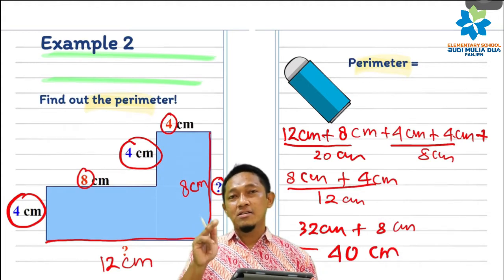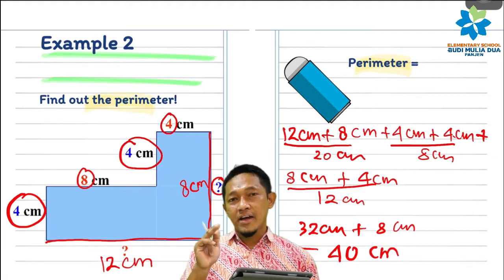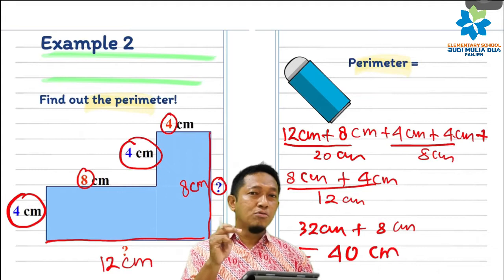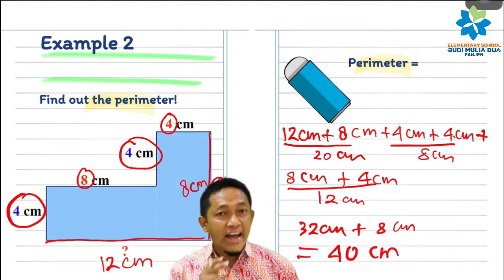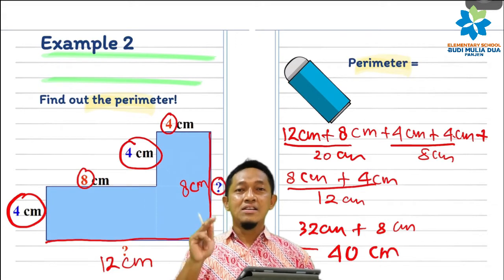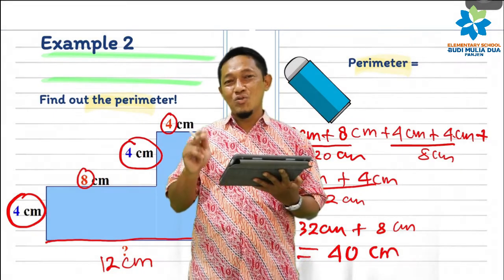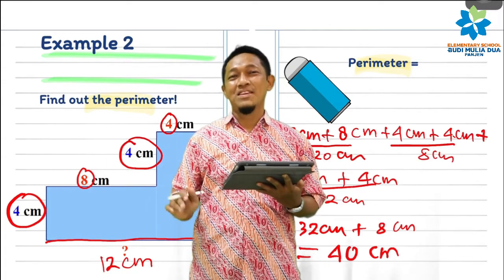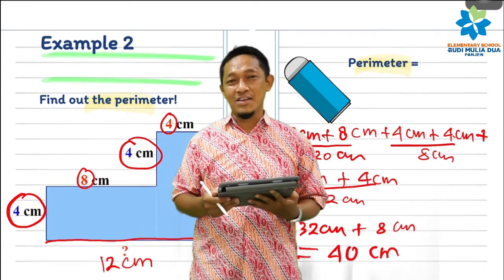So the keyword is: please find out the length of the side that we haven't known before, then add all of the sides together. Don't forget to add all the sides. Okay? Please do the worksheet and see you in the next video. Thank you guys. Assalamualaikum warahmatullahi wabarakatuh.